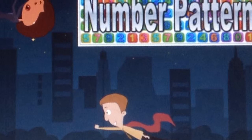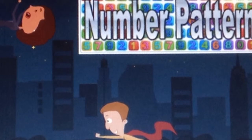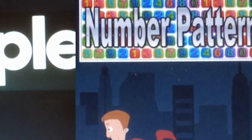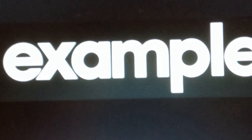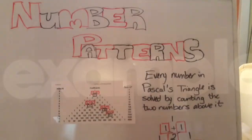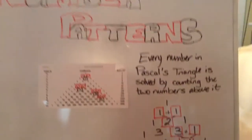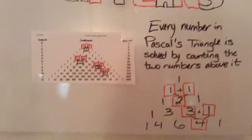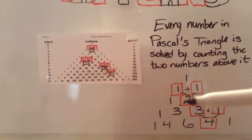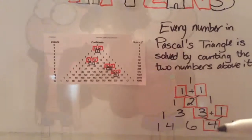You can also find binomial coefficients and construct Pascal's Triangle by using number patterns. Every number in Pascal's Triangle is solved by adding the two numbers above it. So if you want to get 2, you would have had to add 1 plus 1 to get the 2. And the same if you wanted to get 4, you would have to do 3 plus 1 to get the 4.